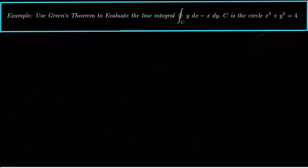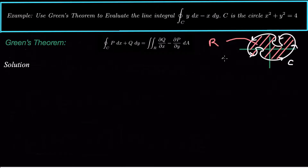Hey guys, what's up? Today we're looking at using Green's theorem to evaluate a line integral around a positively oriented closed curve. A positively oriented closed curve is one that goes counterclockwise, kind of like this curve over here. Green's theorem says that the integral of a 2D vector field P, Q — written as P dx plus Q dy — equals the double integral over the region enclosed by the closed curve C of partial Q partial x minus partial P partial y.